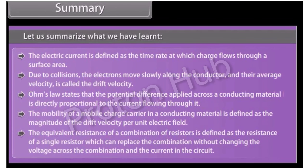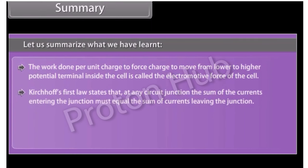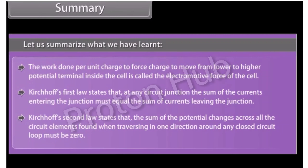The equivalent resistance of a combination of resistors is defined as the resistance of a single resistor which can replace the combination without changing the voltage across it and the current in the circuit. The work done per unit charge to force charge to move from lower to higher potential terminal inside the cell is called the electromotive force. Kirchhoff's first law states that at any circuit junction, the sum of currents entering equals the sum leaving; his second law states that the sum of potential changes around any closed loop is zero.